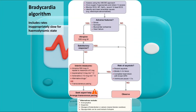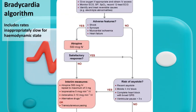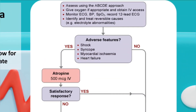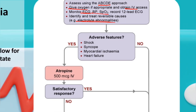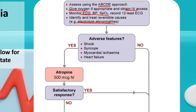Regarding management of bradycardia: initially perform ABCD assessment, give oxygen if needed, obtain IV access, withdraw blood for investigations, monitor the ECG, and check vital signs. If there is an identifiable cause such as electrolyte abnormality, treat it. After ABC, determine whether the patient has adverse features.